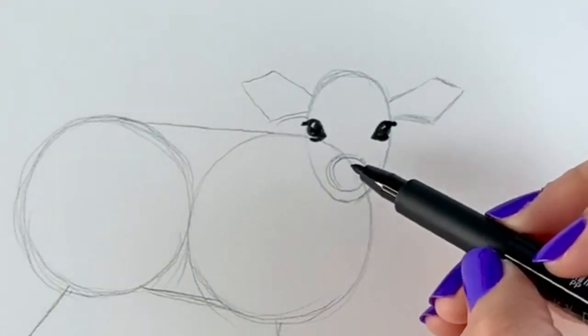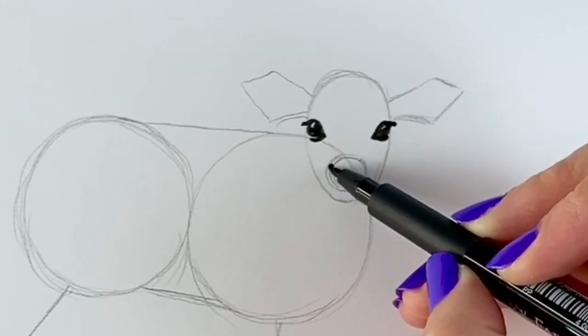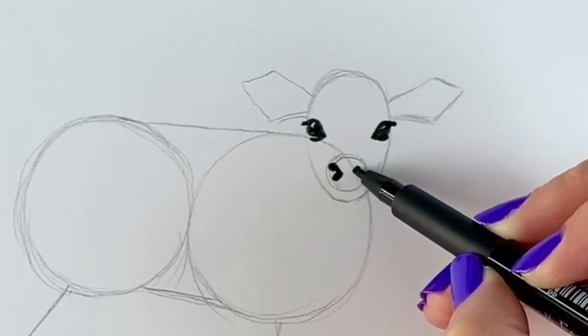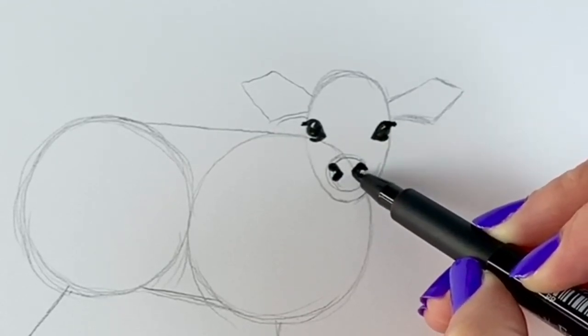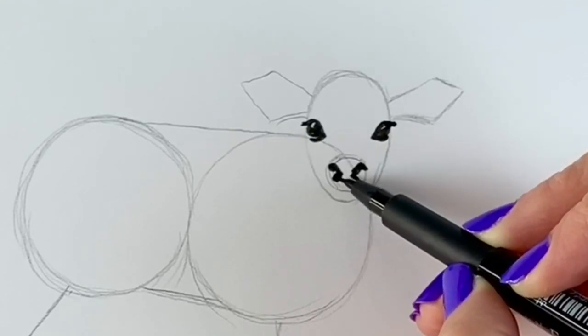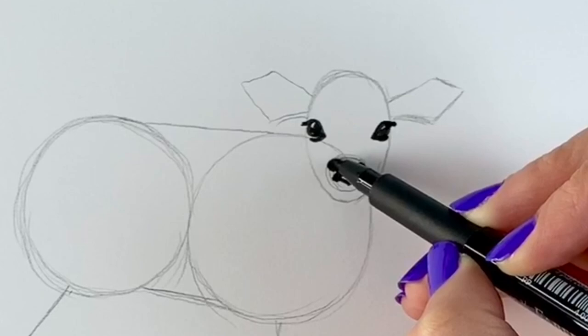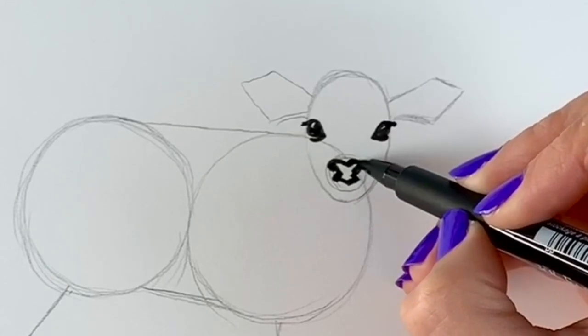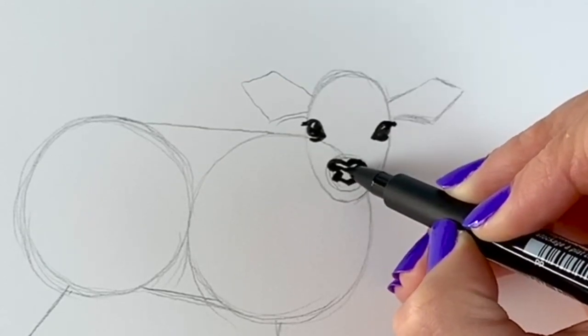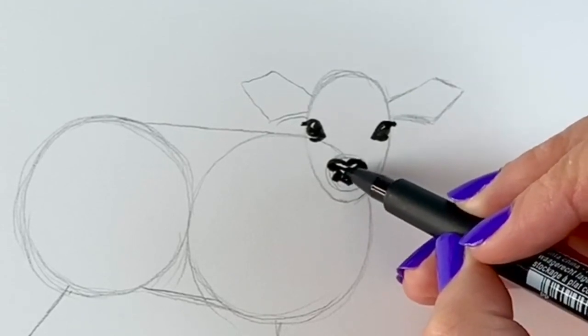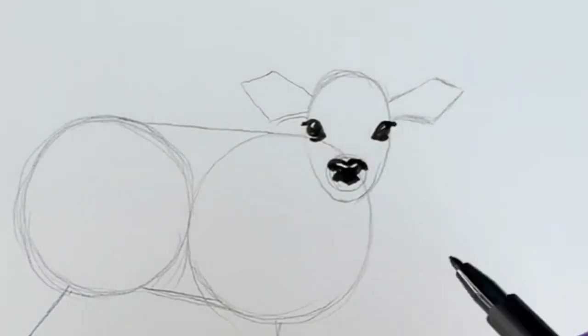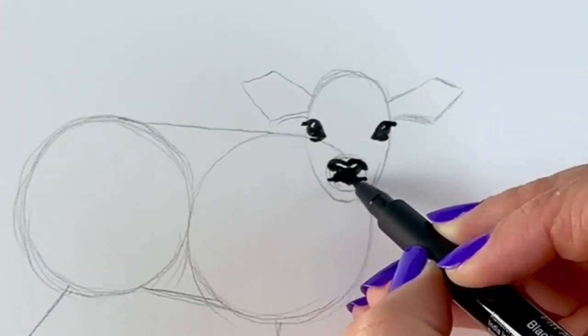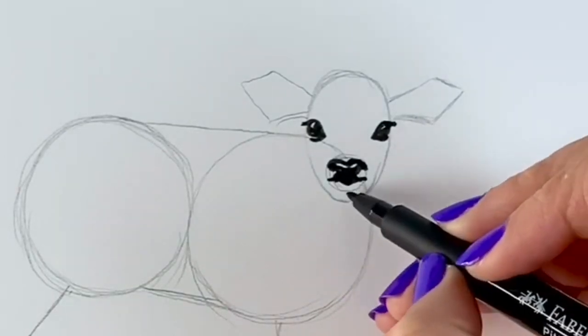We're now going to add in the nose area. So it comes down around like that. Same on this one. It goes down in the middle. Like that. And then just leave a little gap blank so that it looks like it's shiny. See that? Okay, I'm just going to carry on the mouth on either side. There we go. And a little bit underneath.